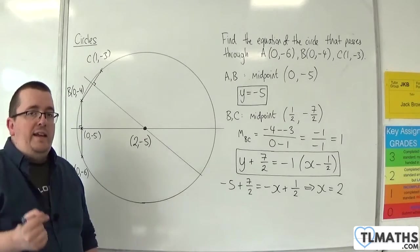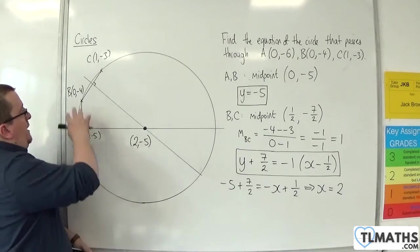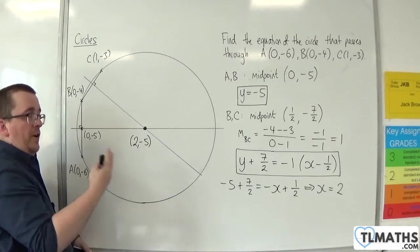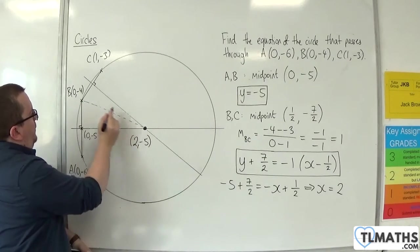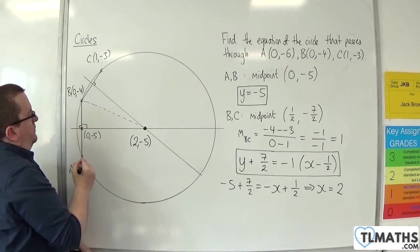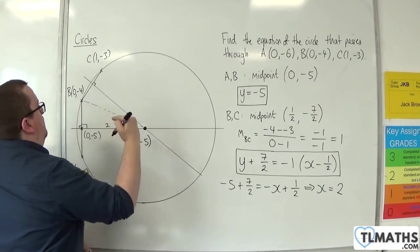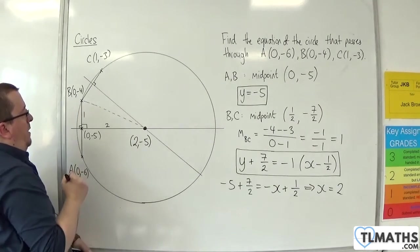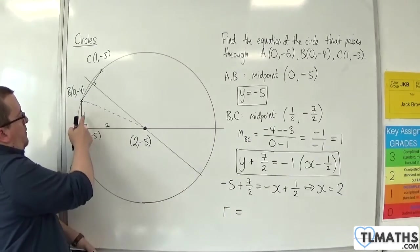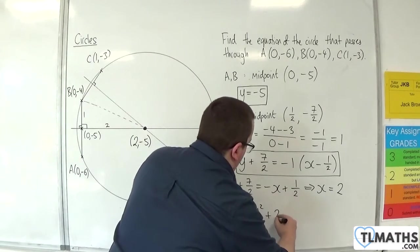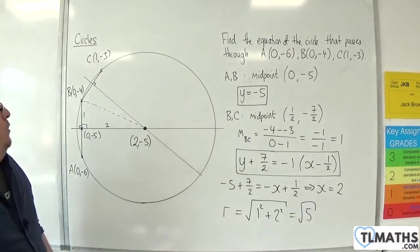The next thing I need to do is I need to work out the radius of the circle. Now to do this, you just need to choose any of your points that you know that lie on the circle and find the distance from one of them to the centre. So I'm just going to focus in on these two points. Here is a right-angled triangle, and we've got a distance from 0 to 2, so that base will be 2. And then from -5 to -4, so that will be 1. So that means that the radius is going to be the square root of 1² plus 2². So that would be √5.